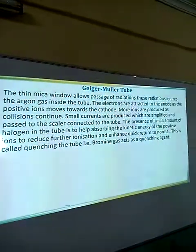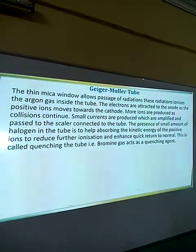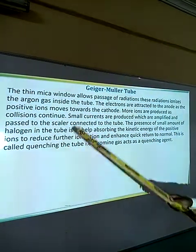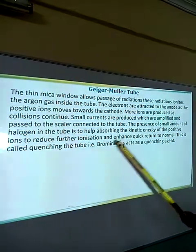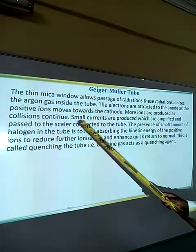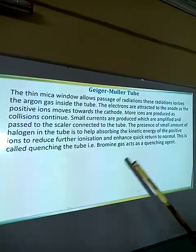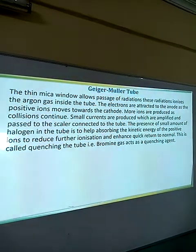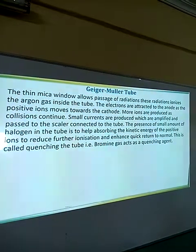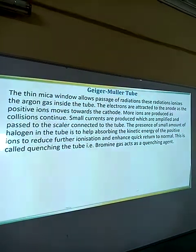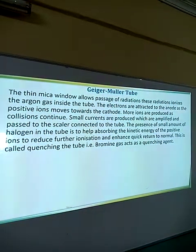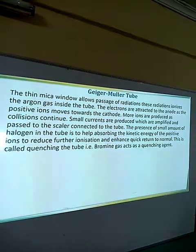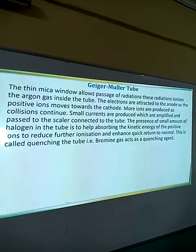The thin mica window allows passage of radiations, which ionize argon gas inside the tube. The electrons are attracted to the anode and the positive ions move towards the cathode. More ions are produced as a result of collisions. The small current is amplified and passed to the scalar connected to the tube. The presence of a small amount of halogen — that is, a bromine gas in this case — acts as what we call a quenching agent.